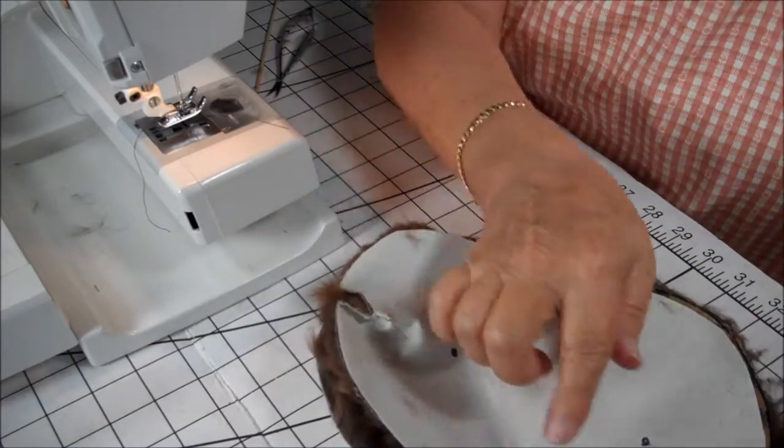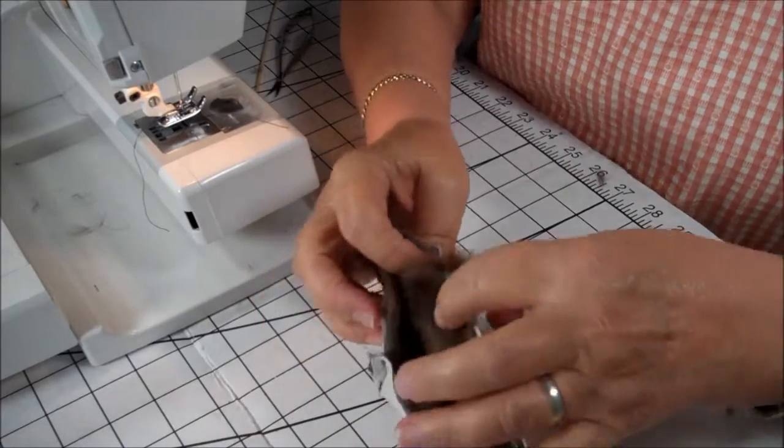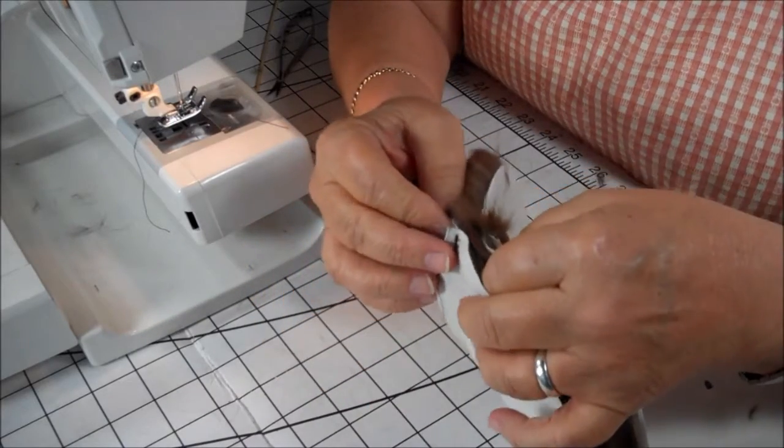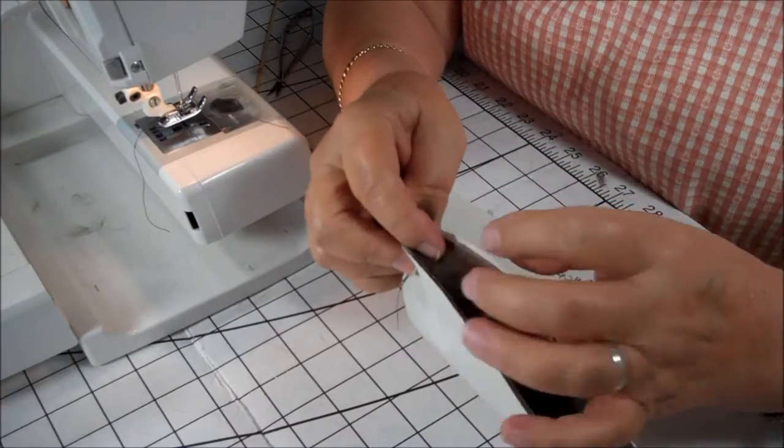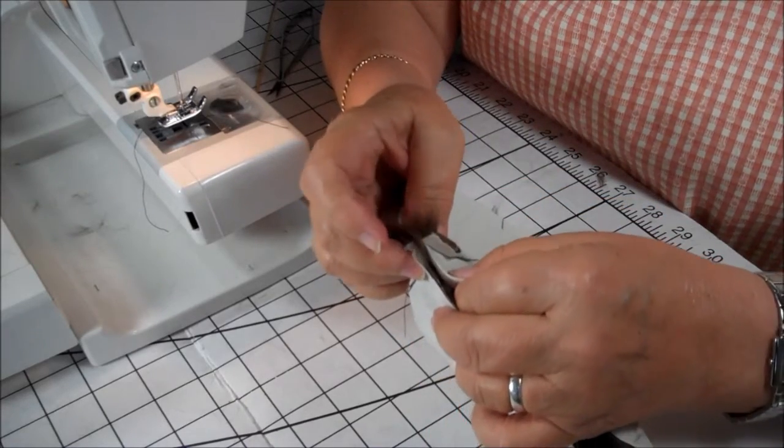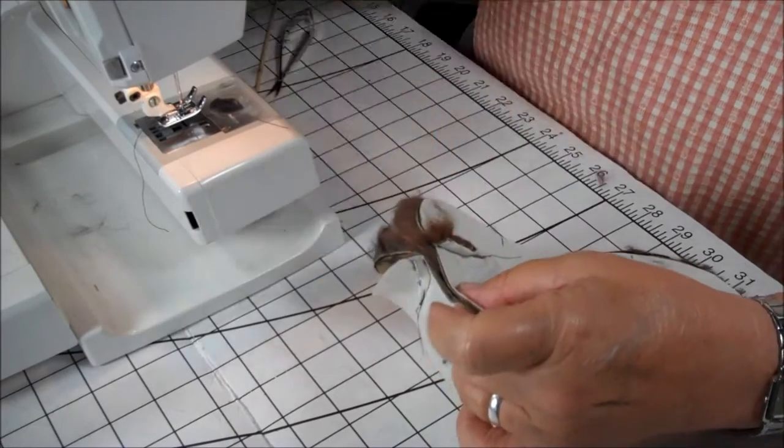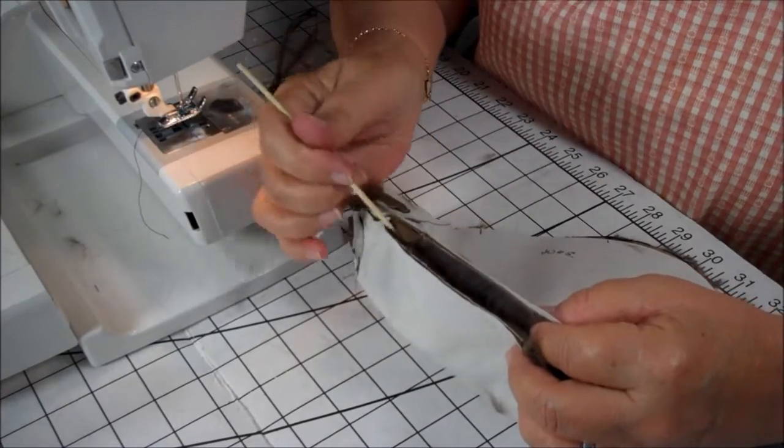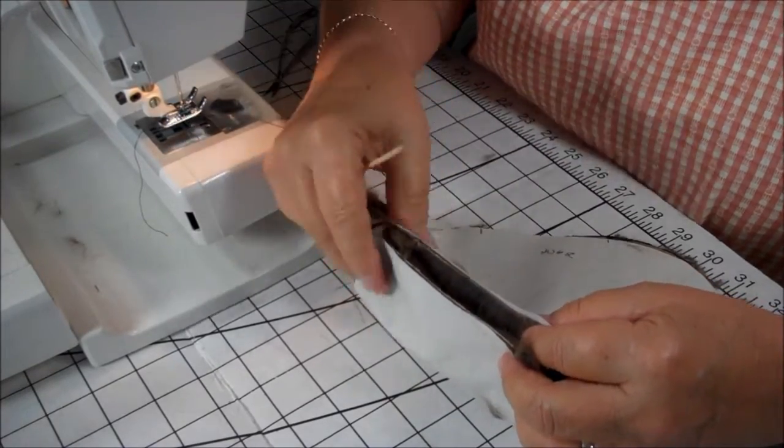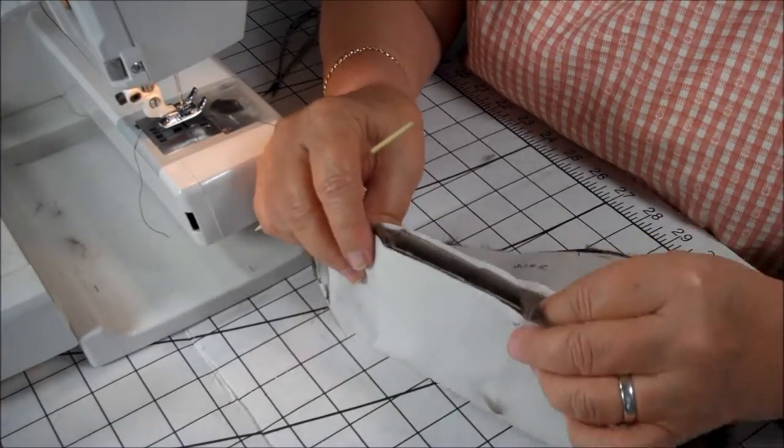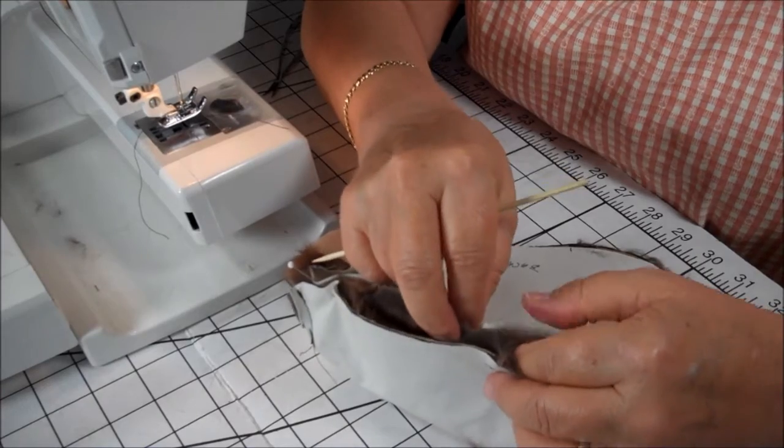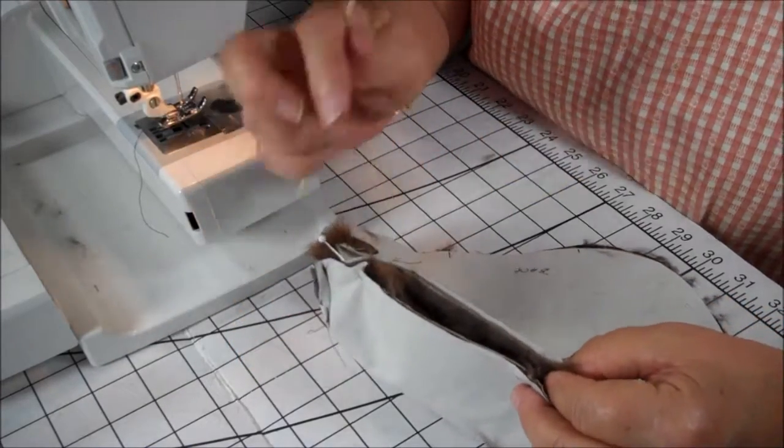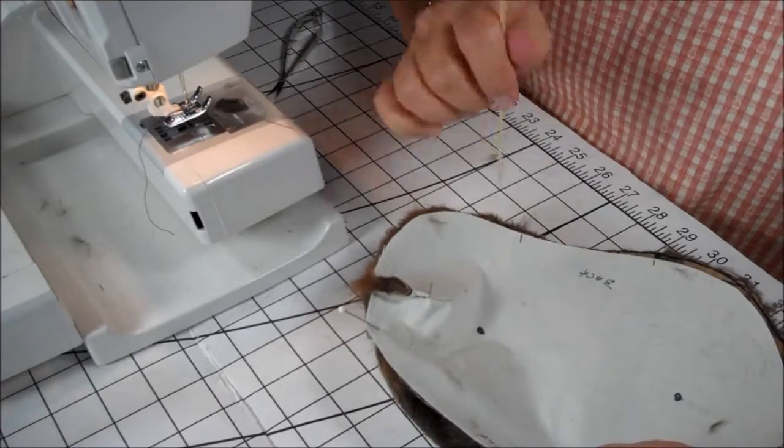Again, this will be the front. What I do is I start pinning it at the top where I've notched the head. We're going to keep pinning and sewing this body the way we did the arms and the legs, tucking in the fur and leaving the back opening.